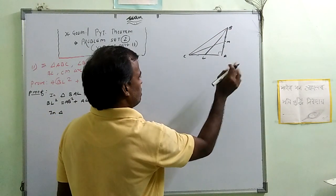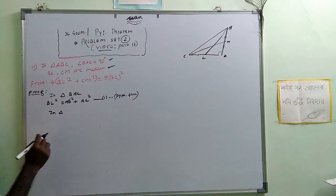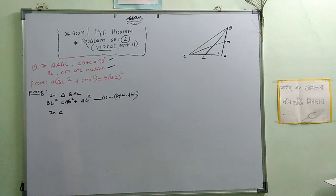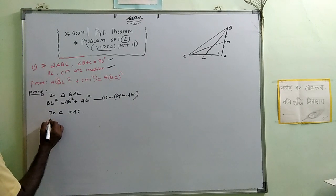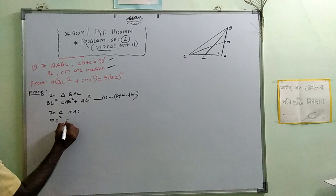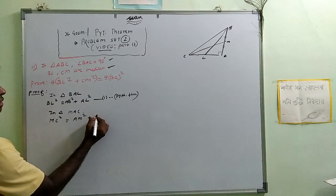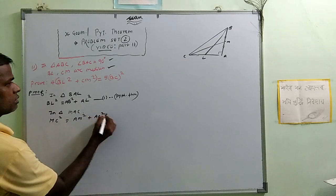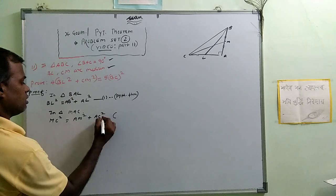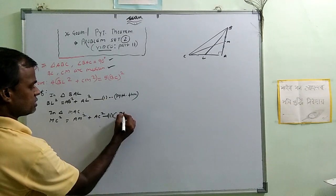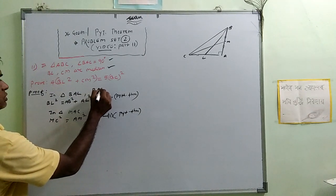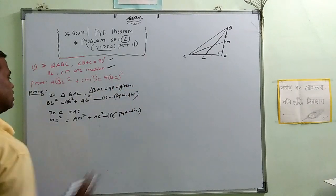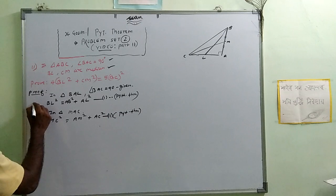Similarly, in triangle MAC, by Pythagoras theorem: MC² equals AM² plus AC². This is equation two. We use Pythagoras because angle A is 90 degrees, and angle BAC equals 90 degrees as given. Therefore we can use Pythagoras theorem here.